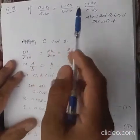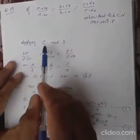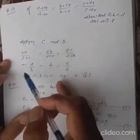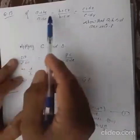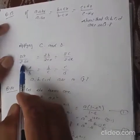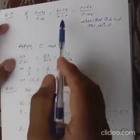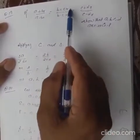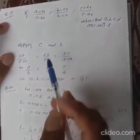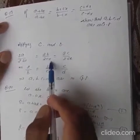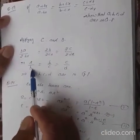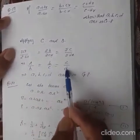We are given the statement, so apply componendo and dividendo. Applying componendo and dividendo to the first ratio gives numerator A plus BX plus A minus BX, which simplifies to 2A, over denominator 2BX. Similarly for the second part: B plus CX plus B minus CX over the difference gives 2B upon 2CX. Likewise, we get 2C upon 2DX.